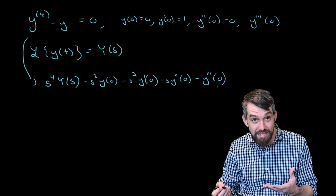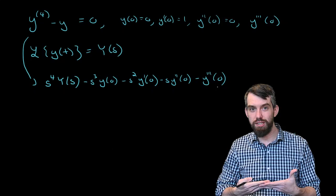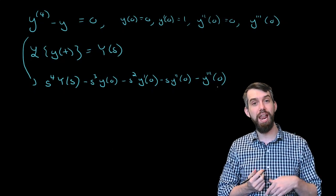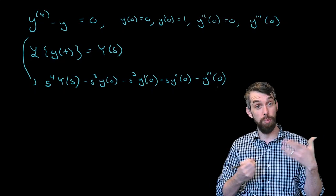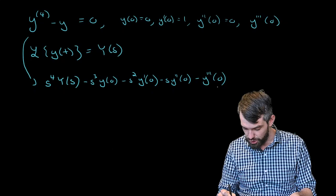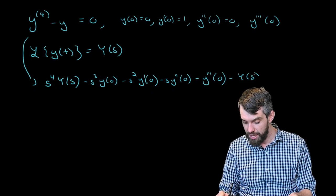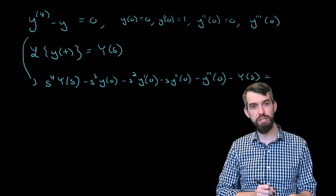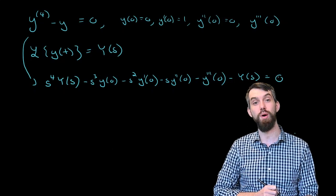So all of that is what the Laplace transform of the fourth derivative is. Then I have to subtract off y, and the Laplace transform of y is just Y of s. And on the right-hand side, the Laplace transform of zero is just zero once again.